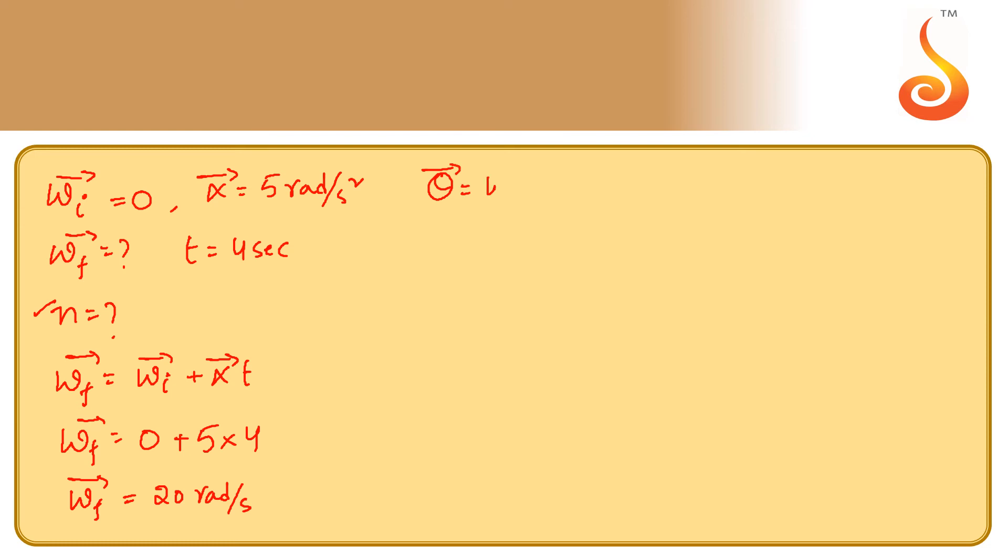Angular displacement θ is equal to initial angular velocity times time plus half alpha t squared. So angular displacement would be initial angular velocity 0 plus half times alpha 5 times time 4 squared which is 16. So theta, the angular displacement, would be 40 radians.